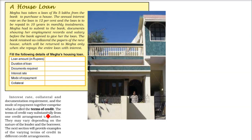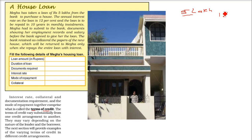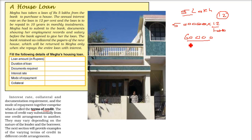Here is an example of a house loan. Megha has taken a loan of 5 lakh rupees from the bank to purchase a house. The annual interest rate is 12%, so 12% of 5 lakh is 60,000 per year. She has to pay 60,000 per year as interest only, and this loan has to be repaid in 10 years — that is 120 installments along with the actual principal amount.